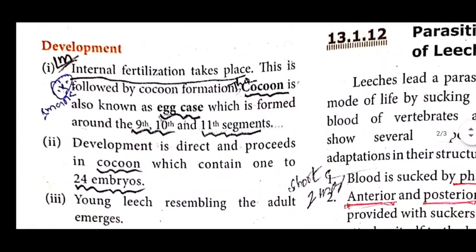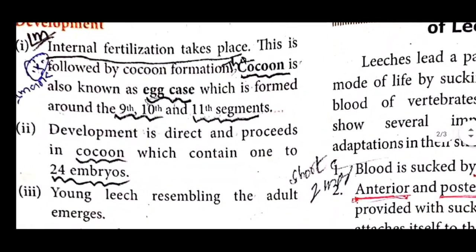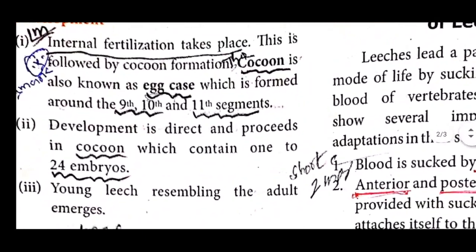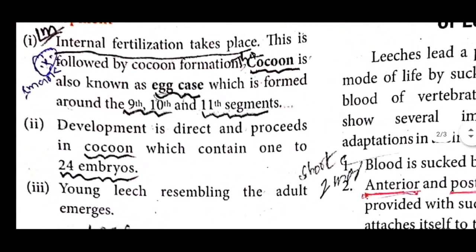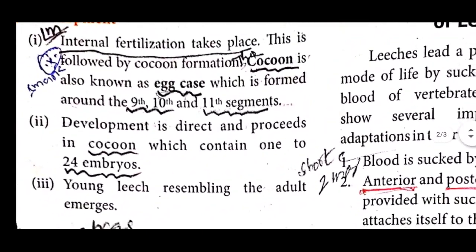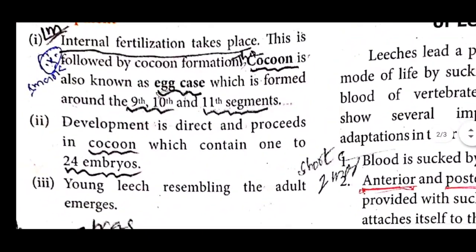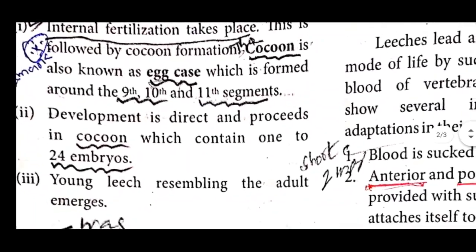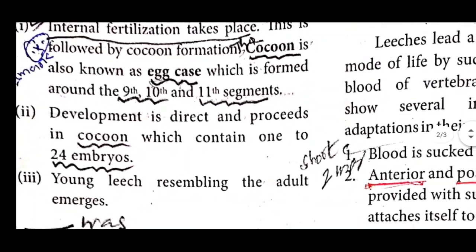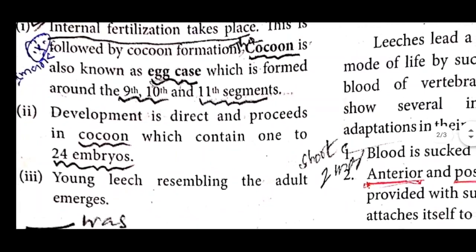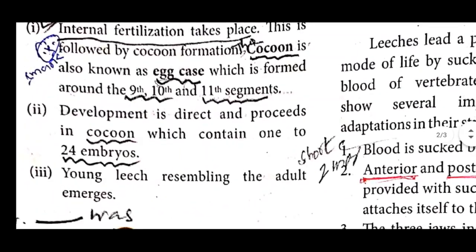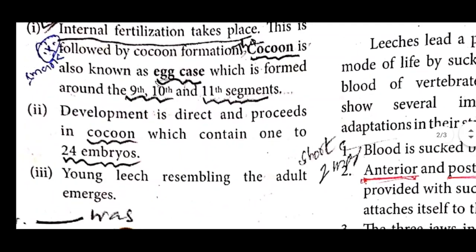Development of Embryo: When internal fertilization takes place, this is followed by cocoon formation. The cocoon is also known as egg case, which is formed around the 9th, 10th, and 11th segments.